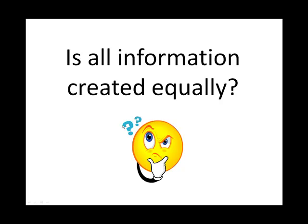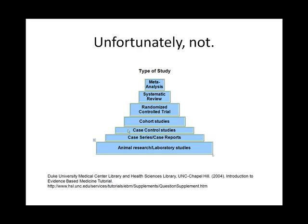Is all information created equally? Unfortunately not. As you can see from this chart, there are several different types of studies that are considered to be evidence-based. As you move up the pyramid, the level of evidence increases, but also the amount of articles using that type of study decreases. So there are fewer meta-analyses than there are articles about animal research or laboratory studies.